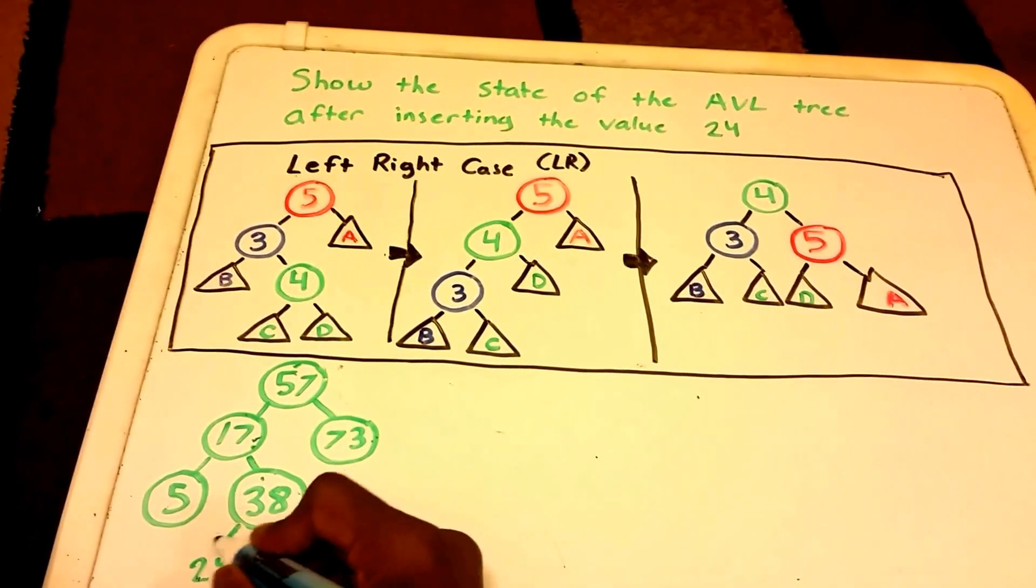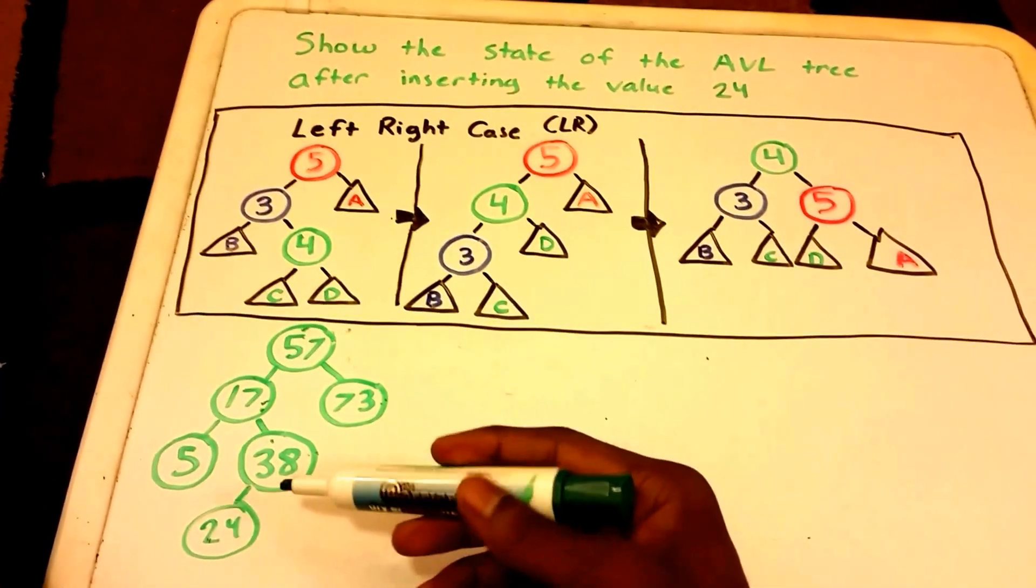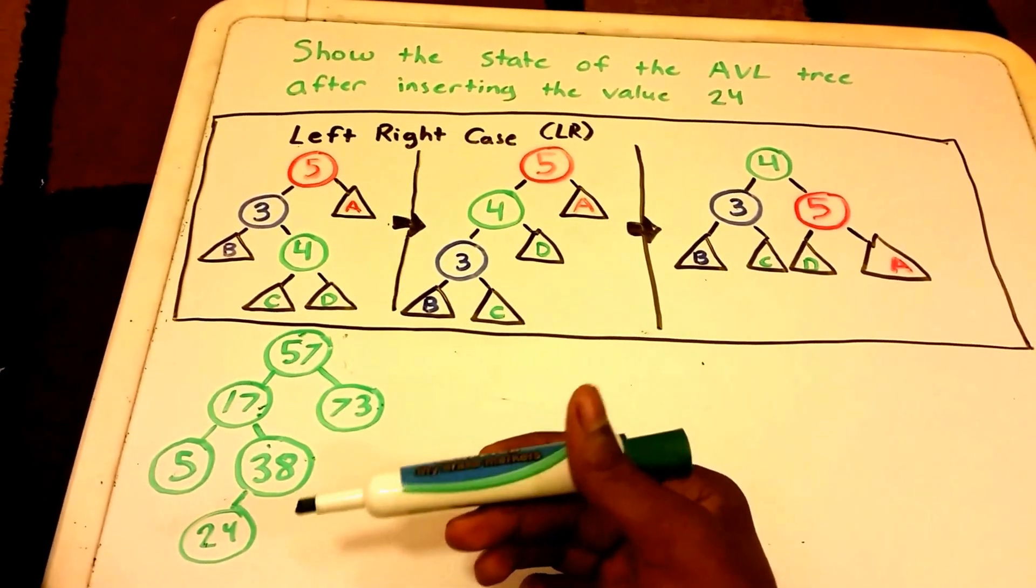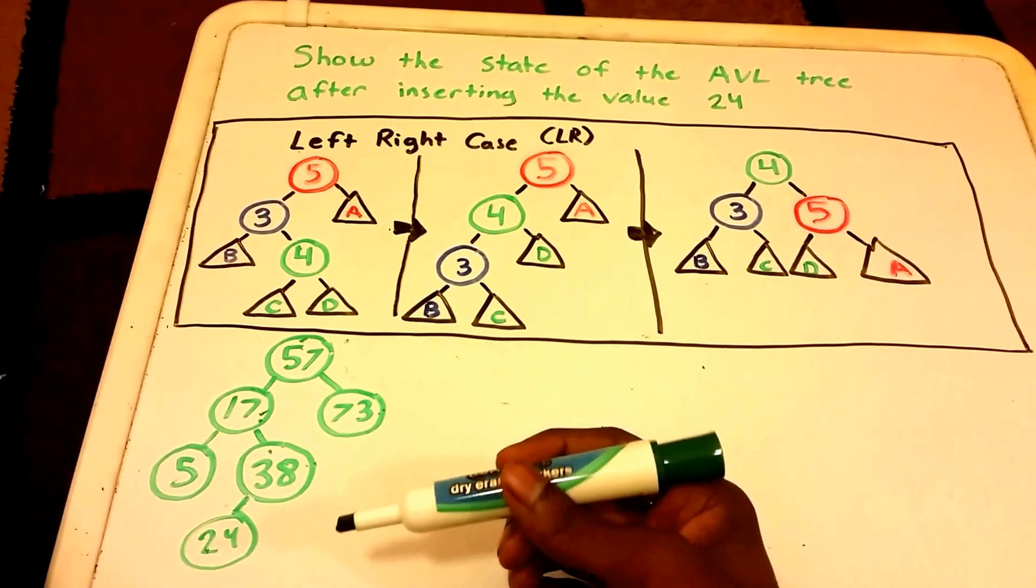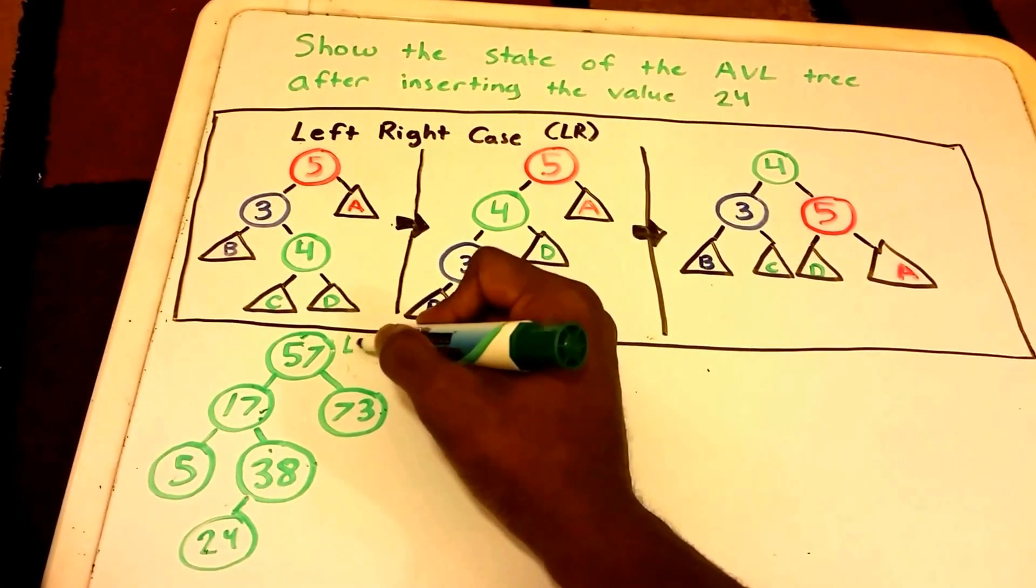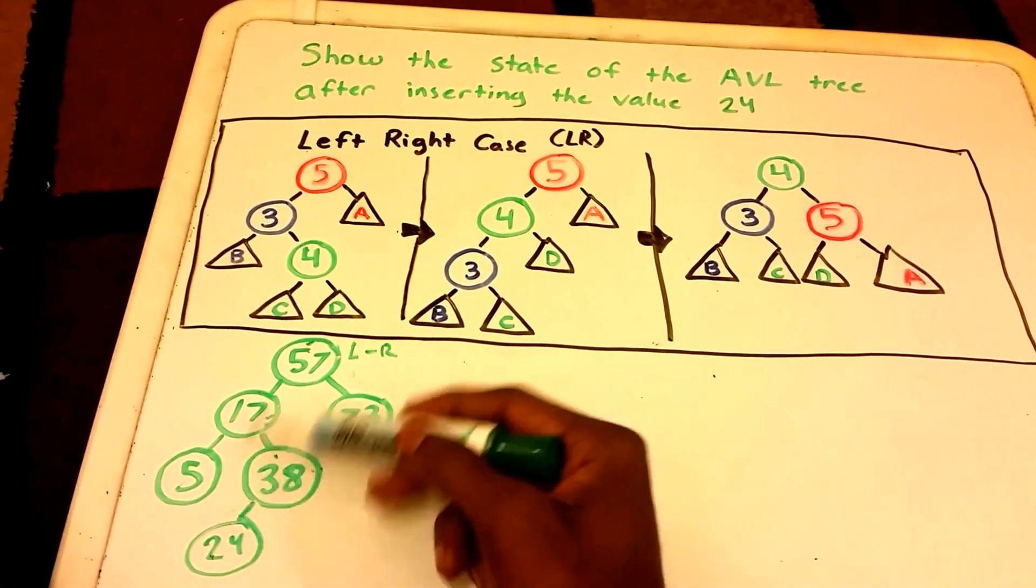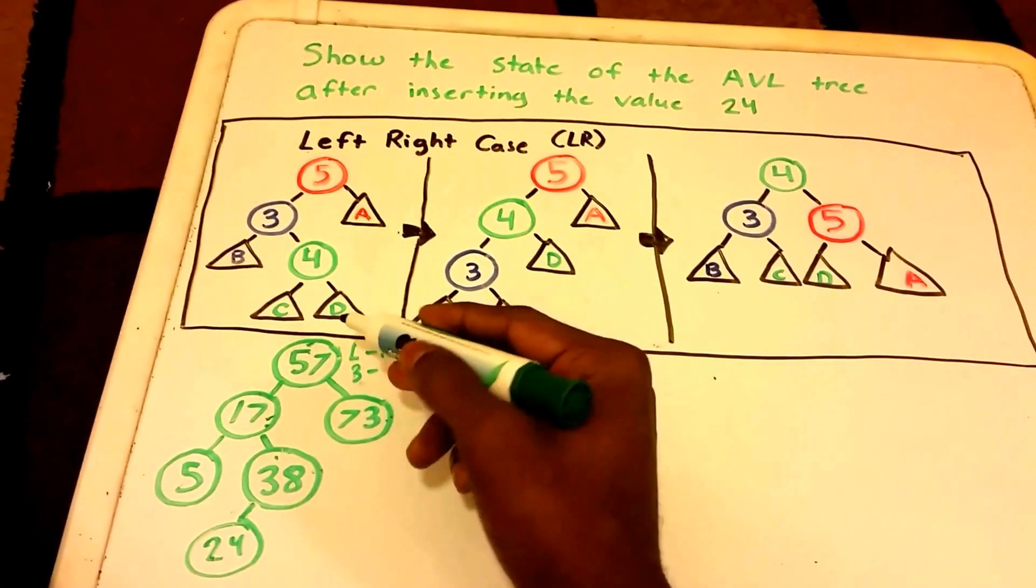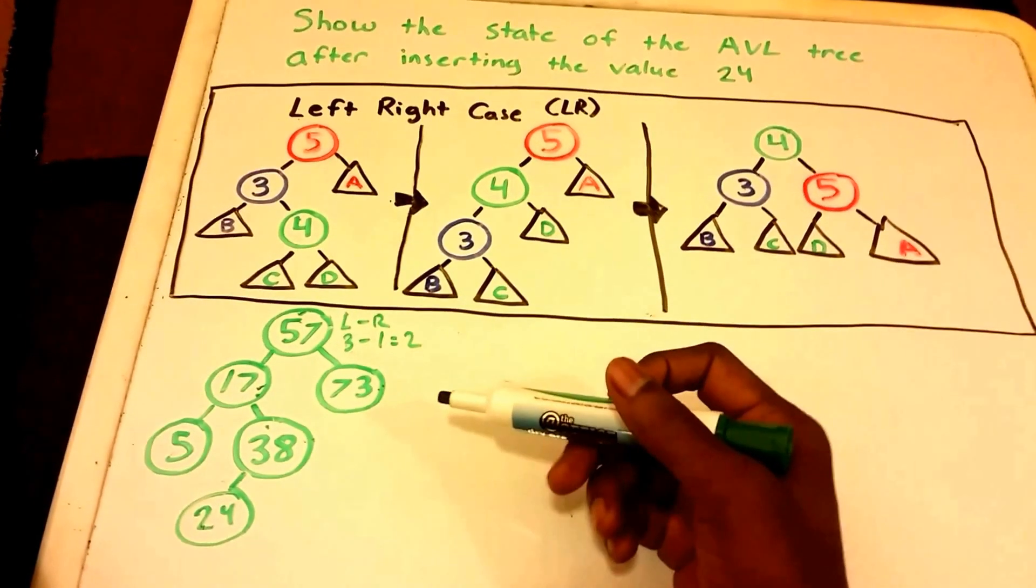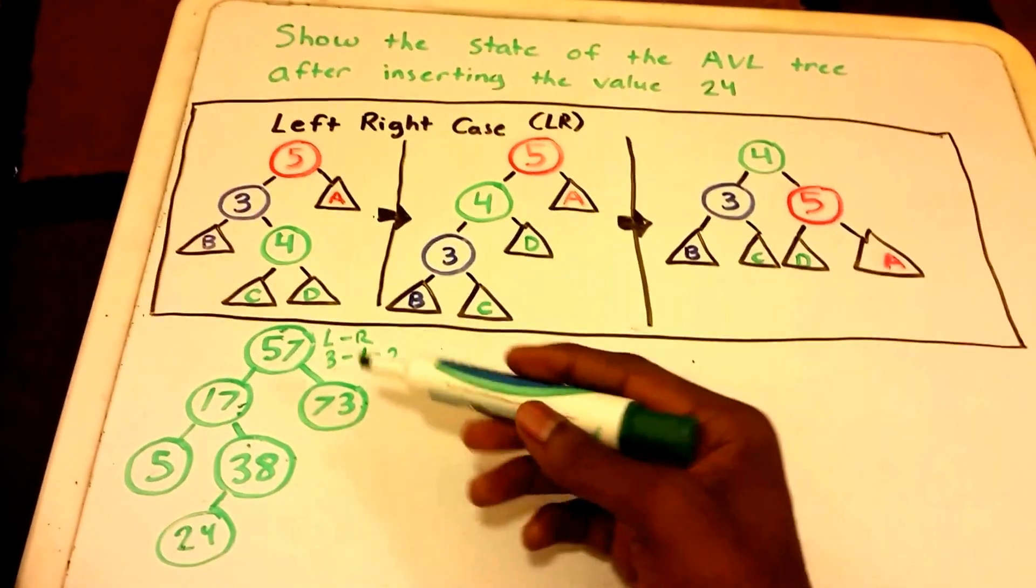Now we need to check our balance factor. The balance factor is the height of the left side minus the height of the right side. The height of the left is 1, 2, 3 for this node, so we put 3 here, minus the height of the right which is 1. We get a balance factor of 2. An AVL tree is only balanced if the balance factor is negative 1, 0, or 1, so it's not balanced—it's 2.